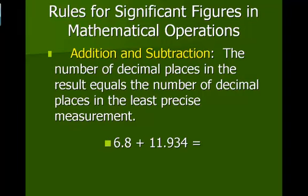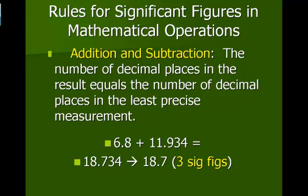So for example, 6.8 plus 11.934. 6.8 goes to the tenths place. 11.934 goes out to the thousandths place. So the least of those two would be the tenths place. So once you've added the two numbers then, you would round it to the tenths place.